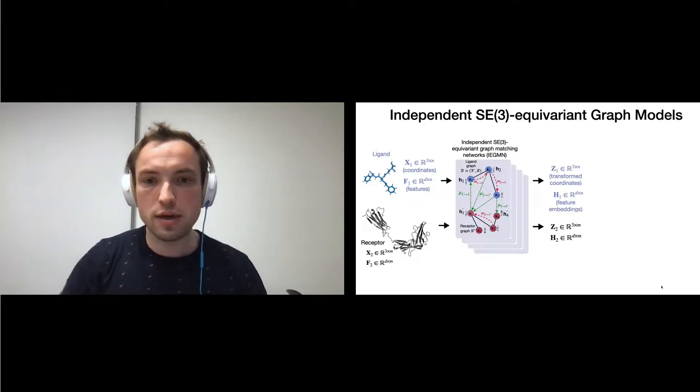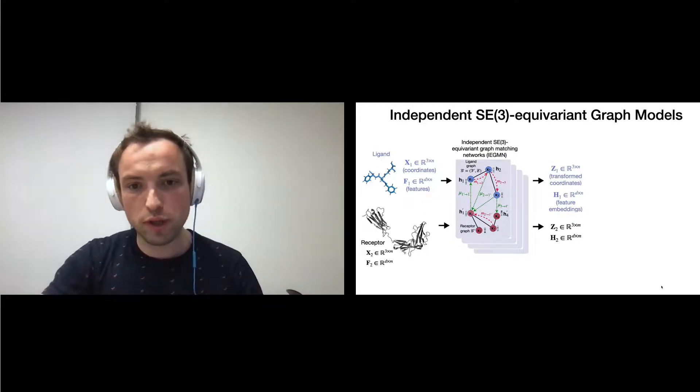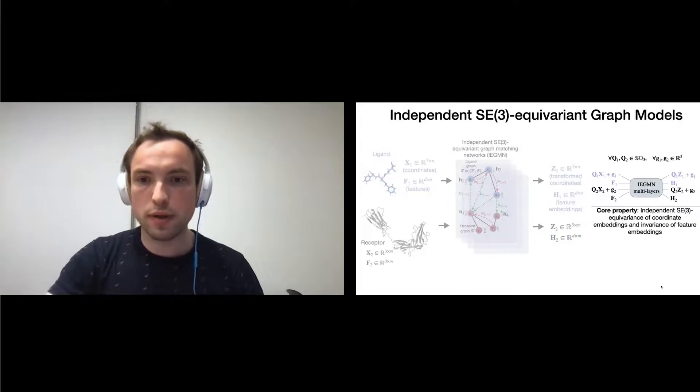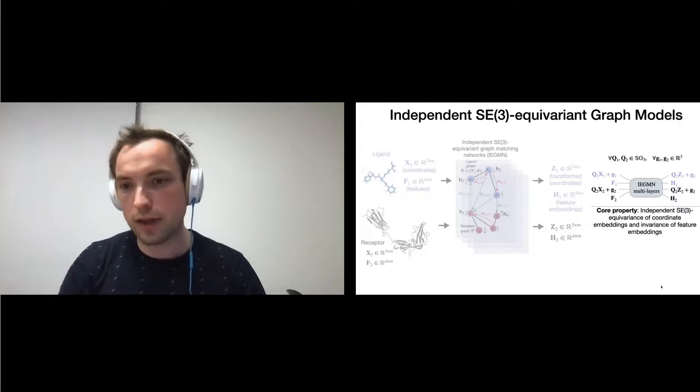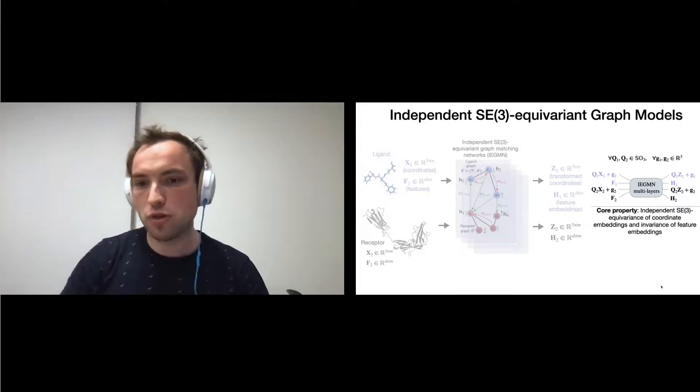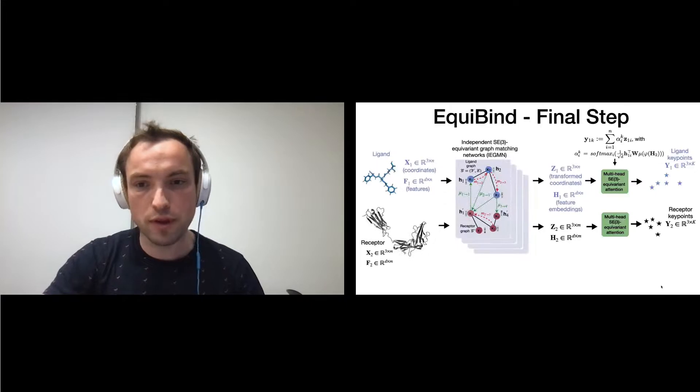We stack several such layers to jointly transform coordinates and features of the two molecules. A core property of this architecture is, by design, guaranteeing independent SE(3) equivariance of coordinate embeddings and invariance of feature embeddings.